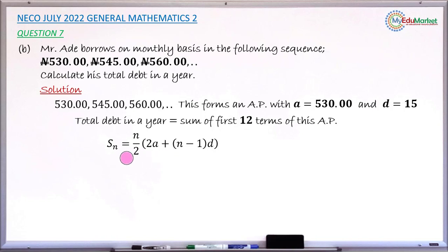So substituting n by 12, a by 530, d by 15 in this formula, we now have S₁₂ equals 12 over 2 multiplied by the bracket inside.